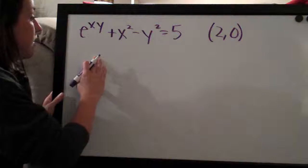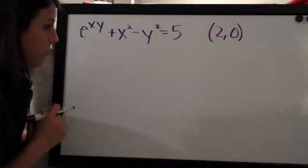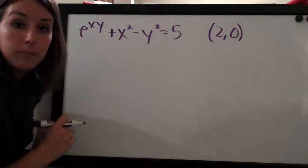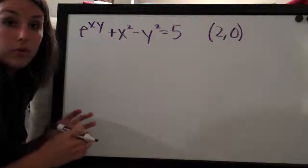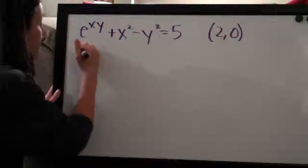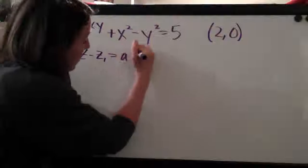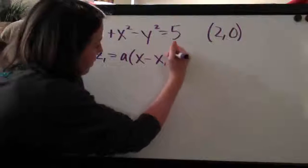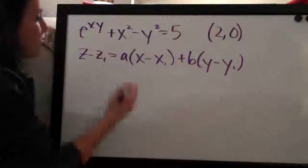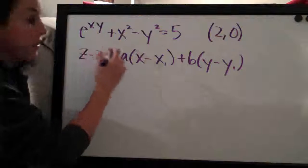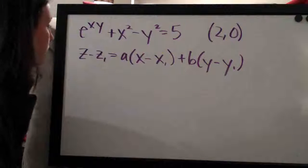We'll first need to take partial derivatives with respect to x and y. Before that, let me write out the linear approximation formula we'll use to build the equation of the tangent line. It looks like this: z minus z1 equals a times (x minus x1) plus b times (y minus y1). When dealing with two variables x and y, this is always the equation to use to find the tangent plane or tangent line.